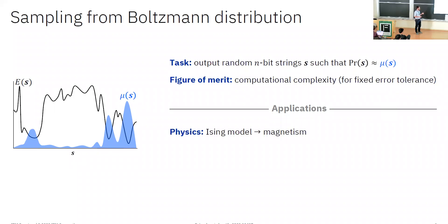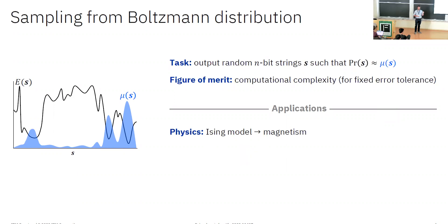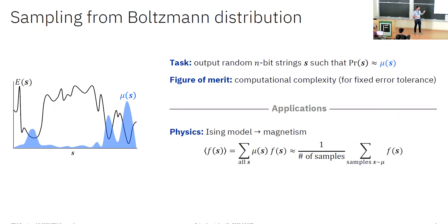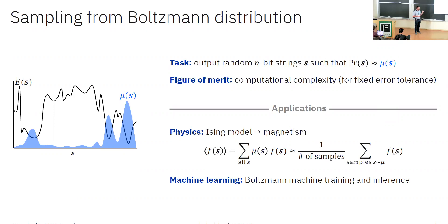Historically, this first came up in physics, where the Ising model was proposed as an early model of magnetism, and the Boltzmann distribution represents the thermal distribution. The sampling aspect comes in if you want to compute the thermal average of some physical quantity f — for instance, magnetization. You could explicitly evaluate the expectation value, which involves a sum over exponentially many terms. But an alternative that's often much cheaper computationally is to sample from this Boltzmann distribution and approximate the thermal average by uniformly averaging over these samples. This exact same trick is used in machine learning, specifically in Boltzmann machines — classical Boltzmann machines — which are classical Ising models invoked for generative modeling. This sampling trick is used both in the inference and training steps, and it can be a bottleneck in both.